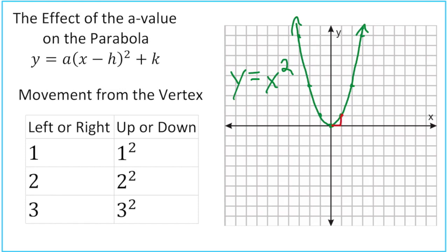So again, we're going over one, up one squared. If we go to the left two, we go up two squared. And if we go back to the vertex and go over three, we're going up three squared. The a value of our parent graph is technically one. All this time, what we've actually been doing is going one squared times the a value, two squared times the a value, three squared times the a value. But since we've only dealt with an a value of one so far, it doesn't have any effect.